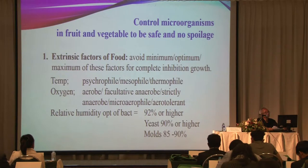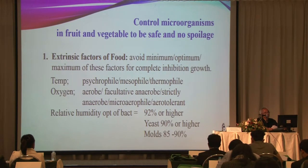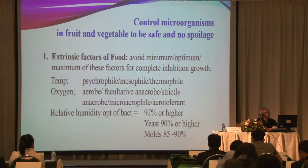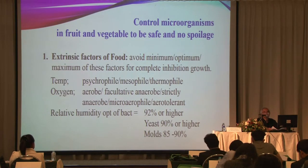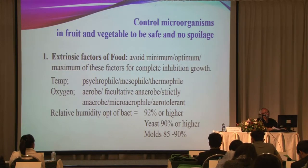How to control microorganisms in fruits and vegetables to keep them safe and prevent spoilage: you can use extrinsic factors of food. Try to avoid the minimum, optimum, and maximum of each factor for complete growth inhibition. Temperature control may target psychrophiles, mesophiles, or thermophiles. Oxygen control — aerobic, facultative anaerobic, and strictly anaerobic organisms may be controlled by modified atmosphere packaging. Relative humidity: the optimum for bacteria is about 92% or higher; molds grow below 90%, sometimes at 85% or lower.